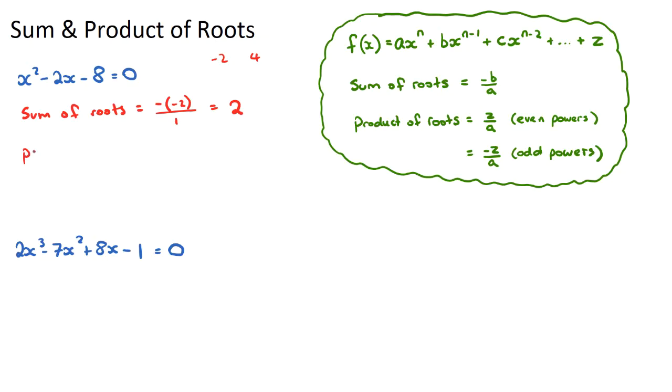Now, the product of our roots formula, the answer is z on a, so it's the constant term over the coefficient of our largest term, and it's positive z on a if our polynomial has an even power. So a quadratic, x to the power of 2, x to the power of 4, x to the power of 6, if our largest power is even, it's just z on a, and if it's an odd, for example, a cubic function, it's negative z on a.